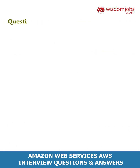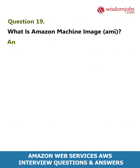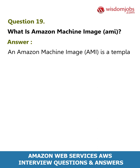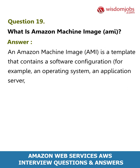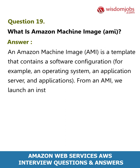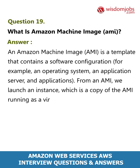Question 19: What is Amazon Machine Image (AMI)? Answer: An Amazon Machine Image (AMI) is a template that contains a software configuration — for example, an operating system, an application server, and applications. From an AMI we launch an instance, which is a copy of the AMI running as a virtual server in the cloud. We can launch multiple instances of an AMI.